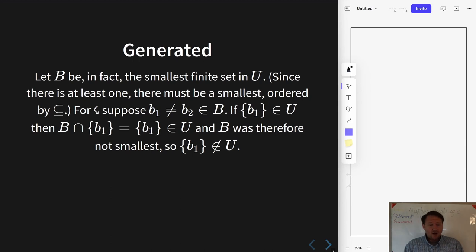So let's think about could I find things that are smaller and get contradictions from that. So yeah, I mean if the singleton b₁ is in U, then you intersect it with B and that's just the singleton b₁ which is in U, then B was not smallest so we can't have that.